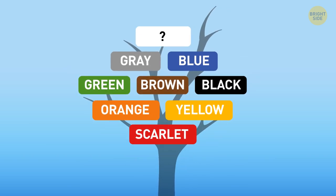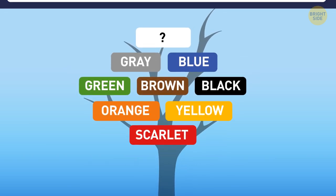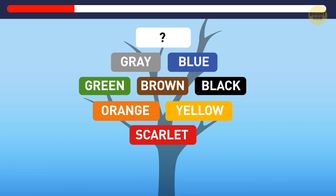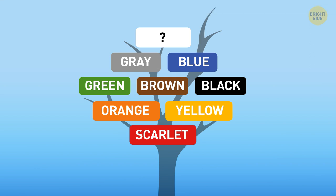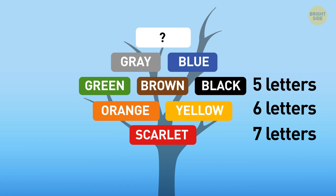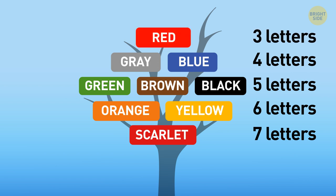Can you guess which color should be added to the top of this tree? The number of letters in the names of these colors gets reduced by one in every next row. Scarlet is made up of seven letters. Orange and yellow have six letters. Green, brown, and black contain five letters. Gray and blue have just four. So, the missing color should be made up of three letters. For example, red.